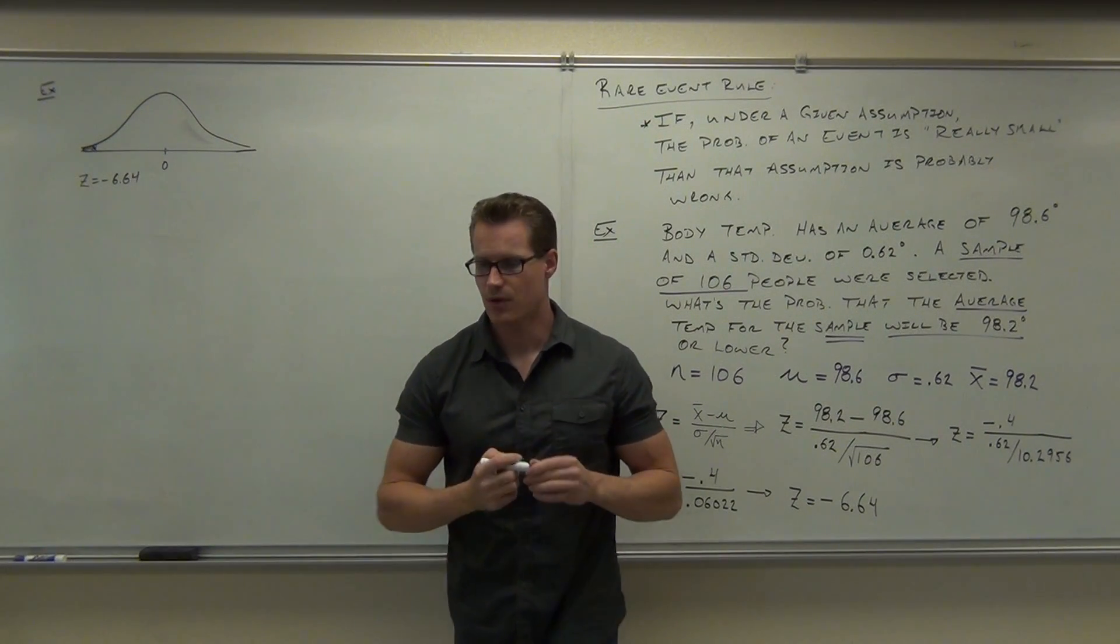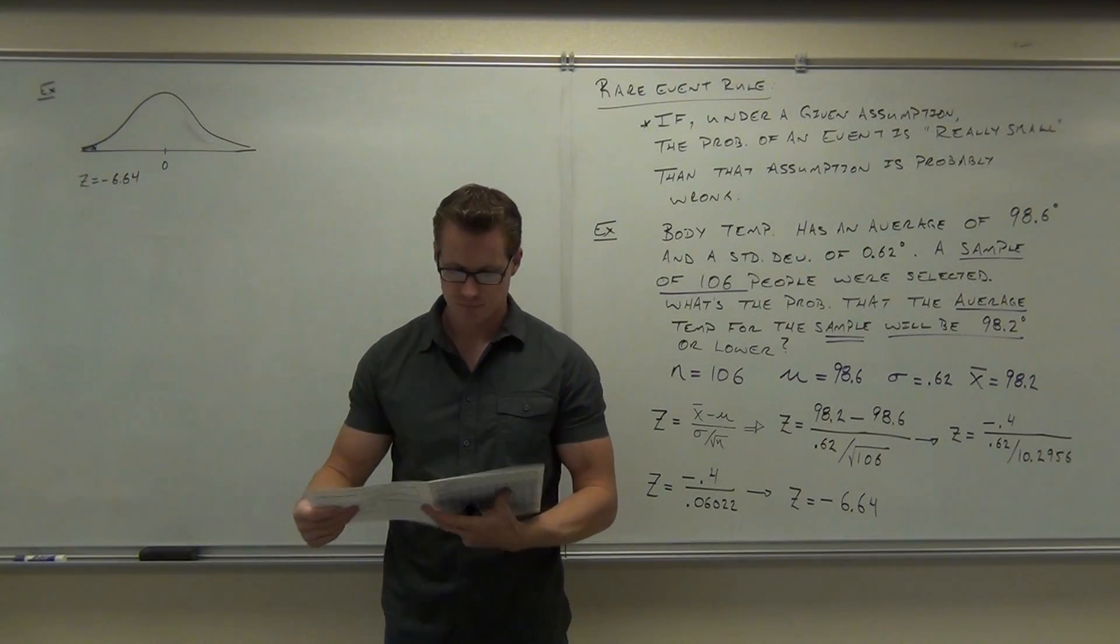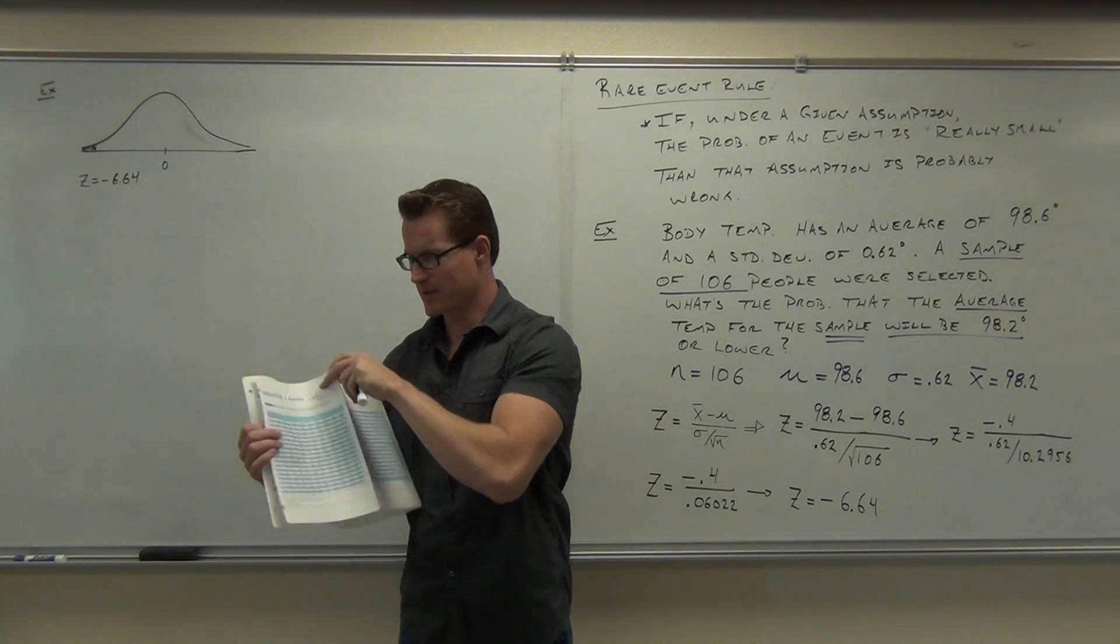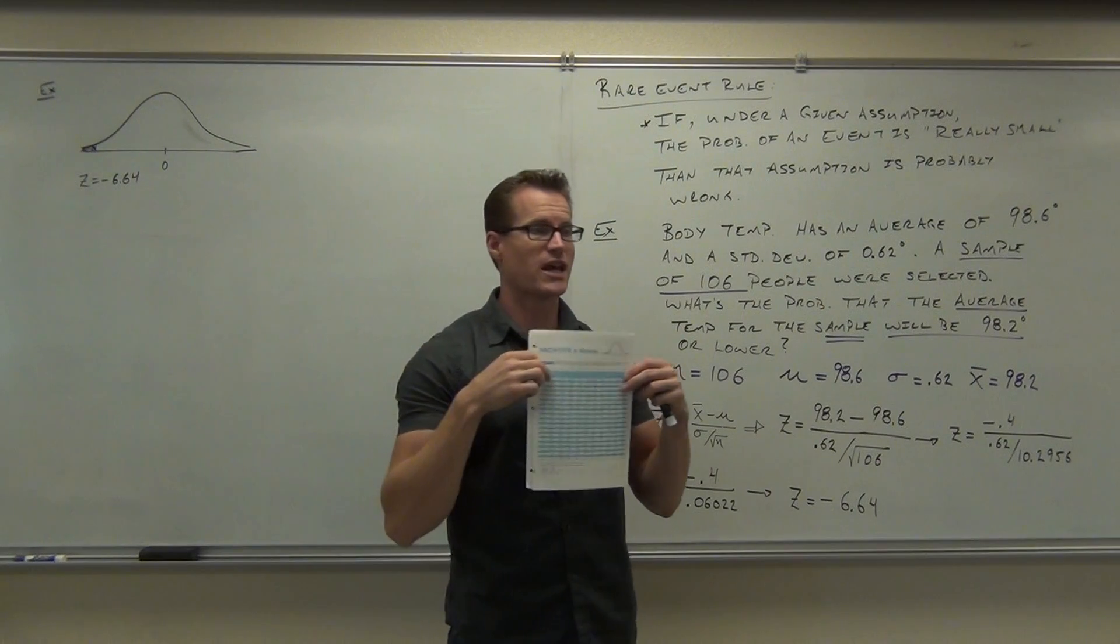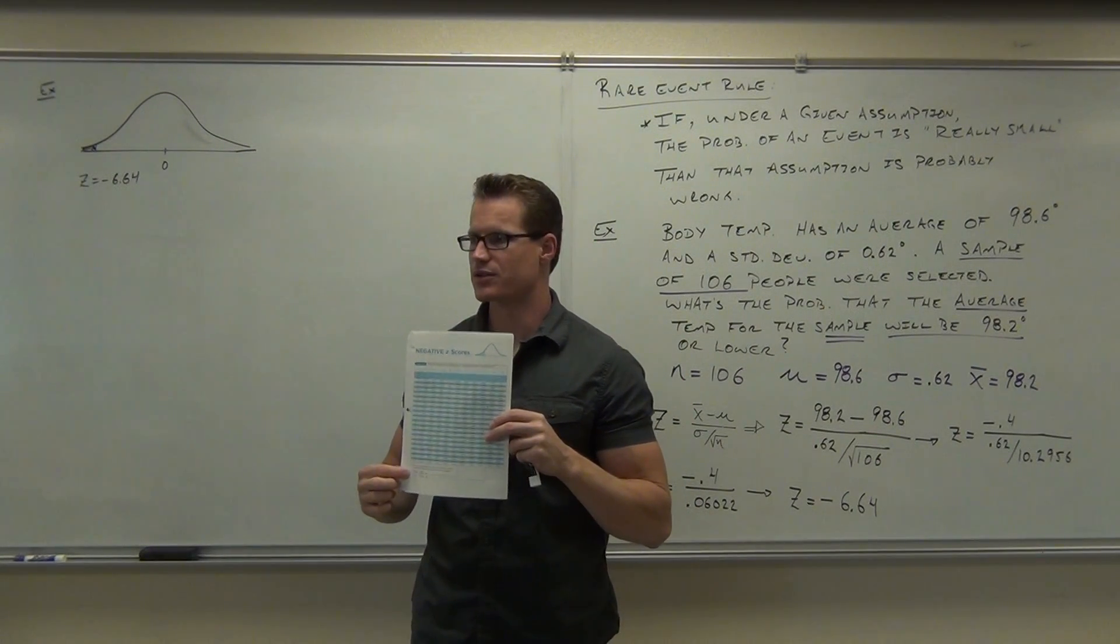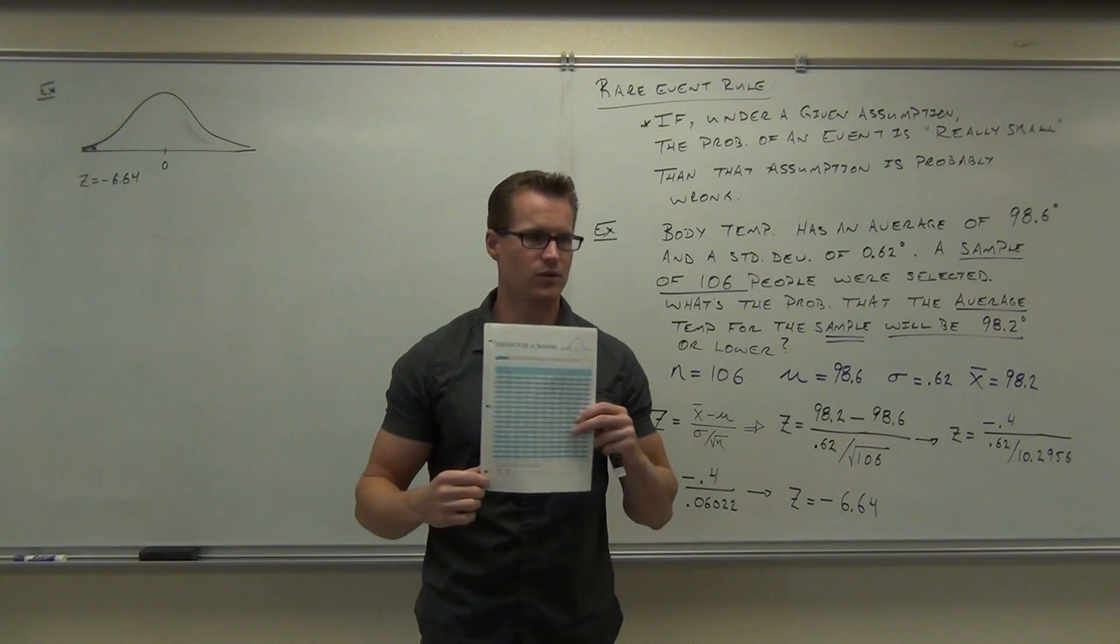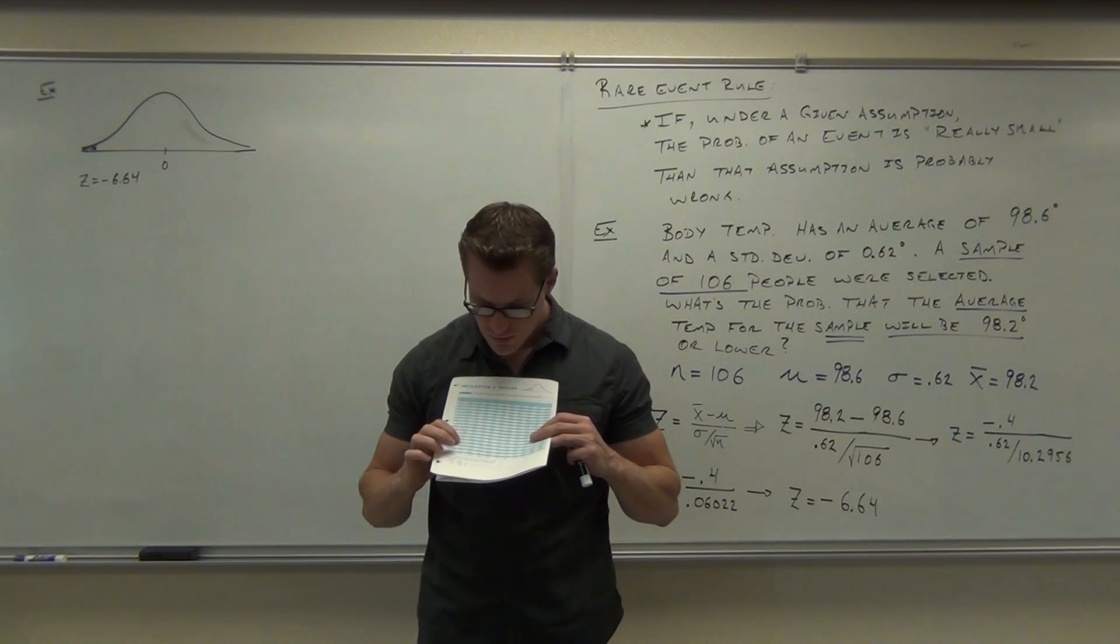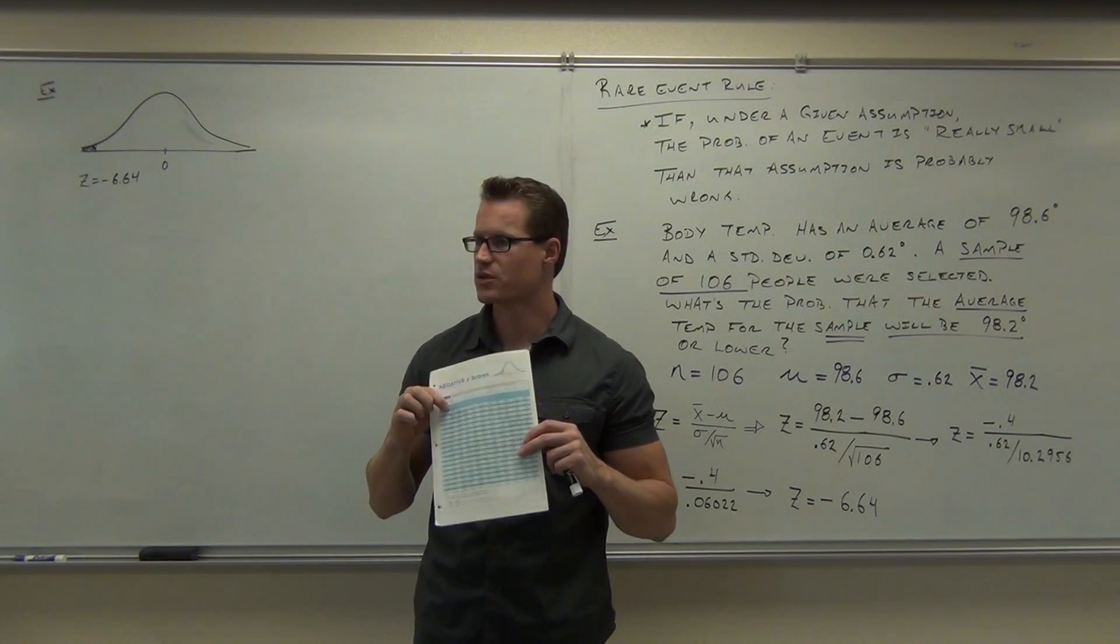Negative 6. If you look at your table, it stops at negative 3.5. And it says something down there. It says for any Z score outside of negative 3.5, you're going to use what value? Negative 3.5 and lower, use 0.0001.